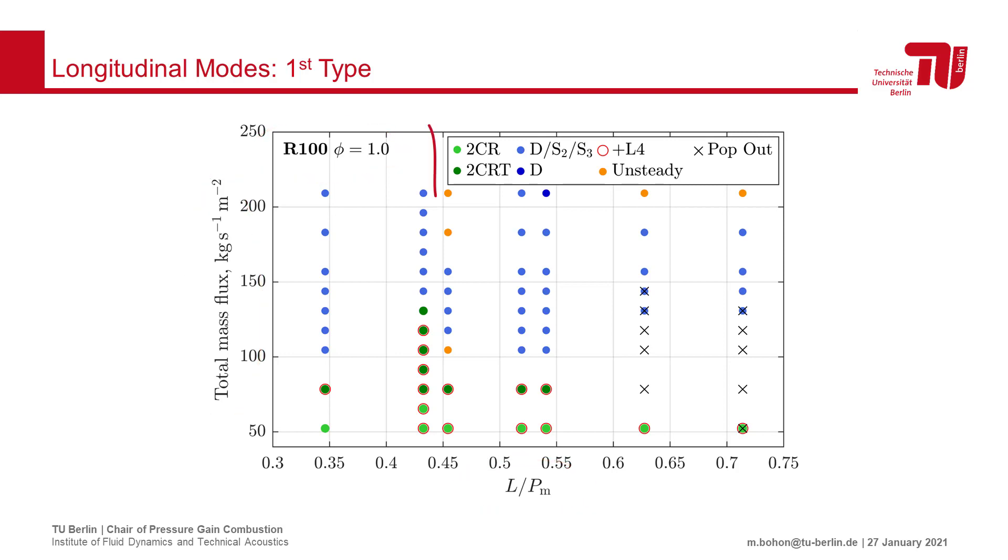At each condition, we identified the rotational components in the pressure and high-speed video measurements, and we were able to identify this region where we observed this mode corresponding to the quarter wave mode. This L4 mode is observed at every combustor length, however only when the mass flow is sufficiently low to not choke the outlet.